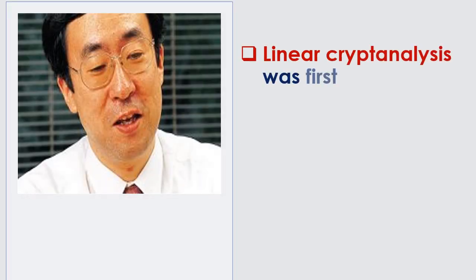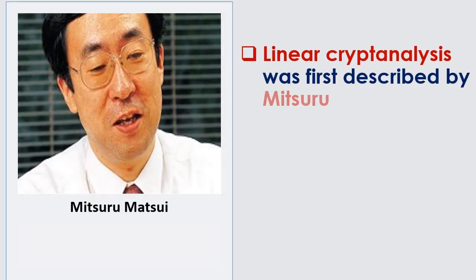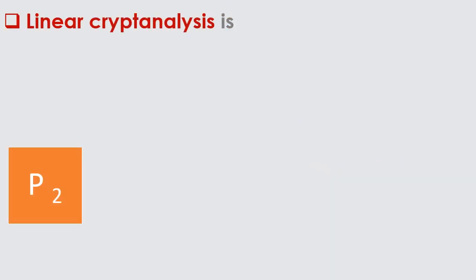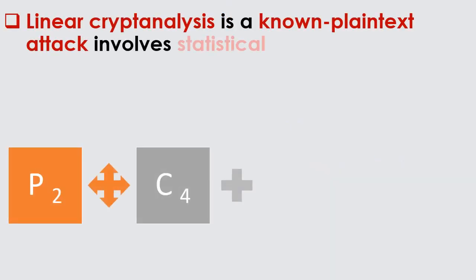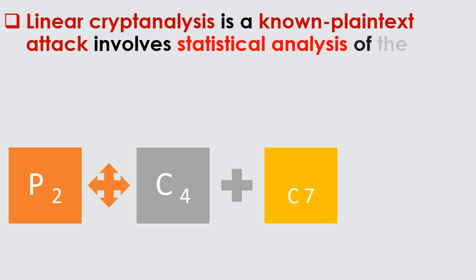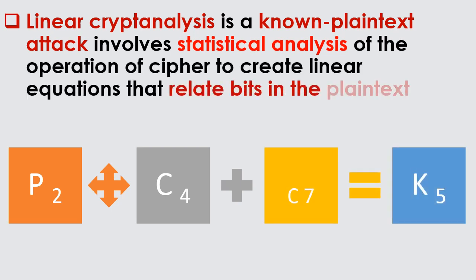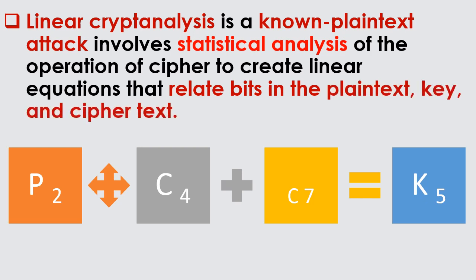Linear cryptanalysis was first described by Mitsuru Matsui in 1992. Linear cryptanalysis is a known plaintext attack that involves statistical analysis of the operation of a cipher to create linear equations that relate bits in the plaintext, key, and ciphertext.